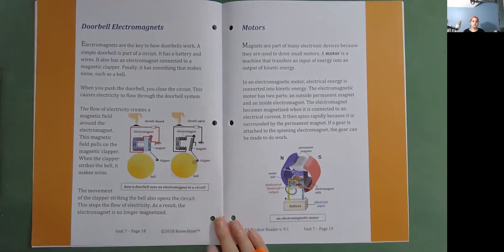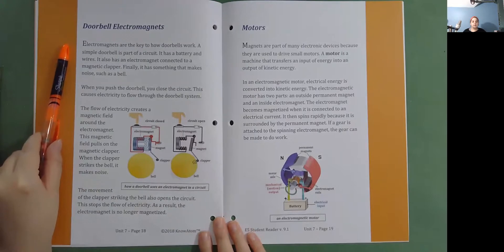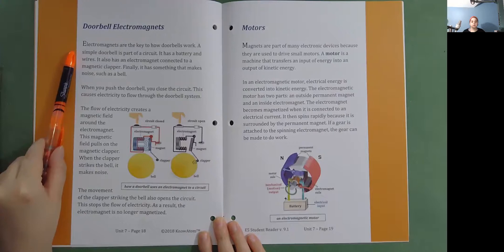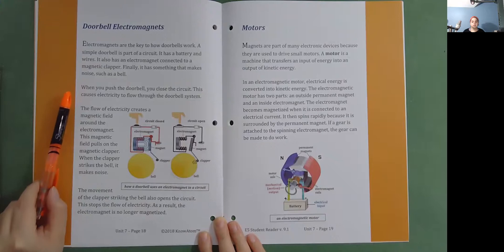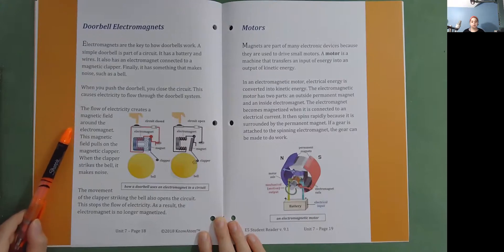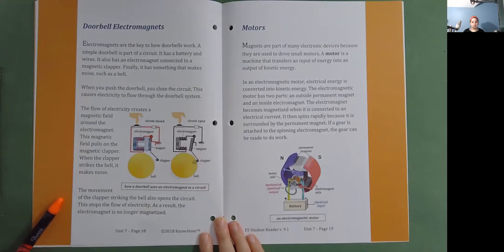Doorbell electromagnets. Electromagnets are the key to how doorbells work. A simple doorbell is part of a circuit. It has a battery and wires. It also has an electromagnet connected to a magnetic clapper. Finally, it has something that makes noise, such as a bell. When you push the doorbell, you close the circuit. This causes electricity to flow through the doorbell system. The flow of electricity creates a magnetic field around the electromagnet. This magnetic field pulls on the magnetic clapper. When the clapper strikes the bell, it makes a noise. The movement of the clapper striking the bell also opens the circuit. This stops the flow of electricity. As a result, the electromagnet is no longer magnetized. How a doorbell uses an electromagnet in a circuit.